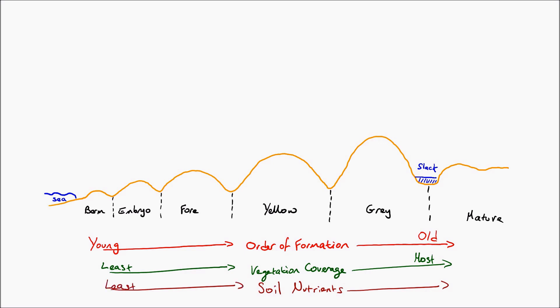You can see over here on the diagram that we follow kind of a young to old analogy running from embryo all the way to the mature stage. And as we move from the left hand side of the diagram to the right hand side of the diagram you can see that they get older. The berm will turn into the embryo dune which will turn into the foredune and so forth.